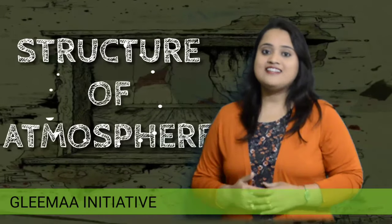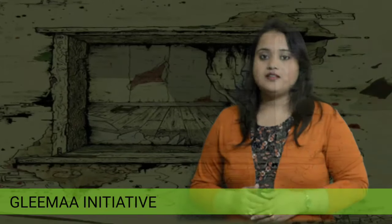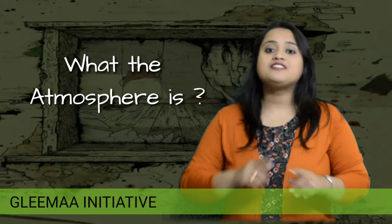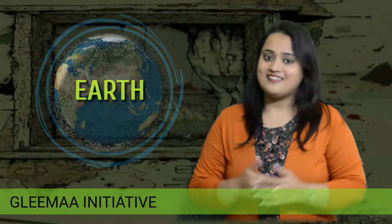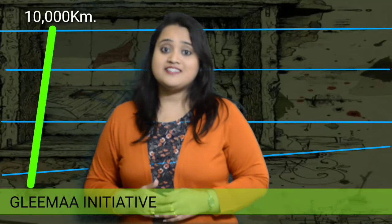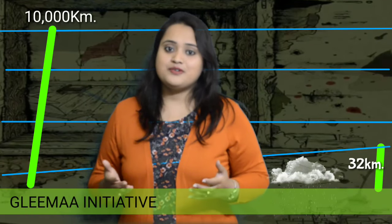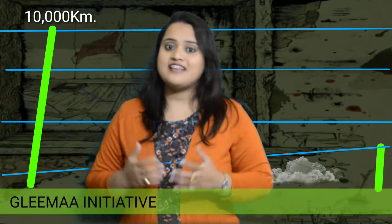Today we will discuss about a very popular and very common geographical fact, that is the structure of atmosphere. Atmosphere is nothing but an envelope of air that completely surrounds our Earth. It is the presence of atmosphere with abundant supply of oxygen that makes the Earth a unique planet in the whole universe. This oxygen is responsible for the origin and growth of life on Earth. Atmosphere extends up to thousands of kilometers from the Earth's surface, but 99% of the entire mass of atmosphere only lies within 32 kilometers. This is due to the gravitational pull of the Earth which holds the atmosphere towards it.